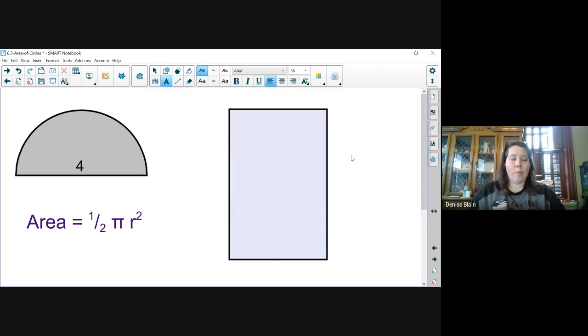In our last example, we see we're using a semicircle whose diameter, again, is 4 units. So we take our equation for area and we're going to multiply it by one half.